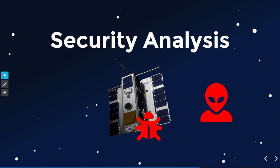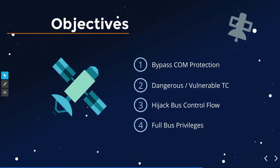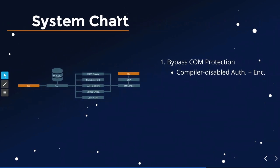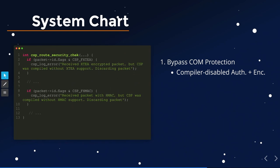Let's look at the actual security analysis. Recap: we want to bypass communications protection, find a dangerous or vulnerable telecommand, hijack the bus control flow, and gain full bus privileges. We've already established that the upper stack's UHF component has no security measures and libCSP's security measures are disabled. So communications protection is bypassed.